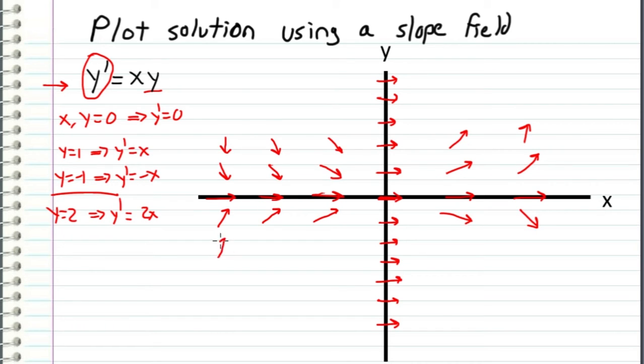Now we can kind of see the pattern that's happening. As we go up and down, the slope just continues to steepen. So I can just kind of fill this out right now. And what we get is a slope field that looks somewhat like this. It's not drawn perfectly, but you get the idea.